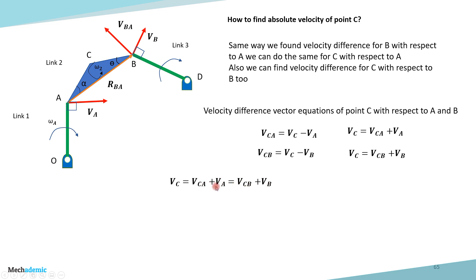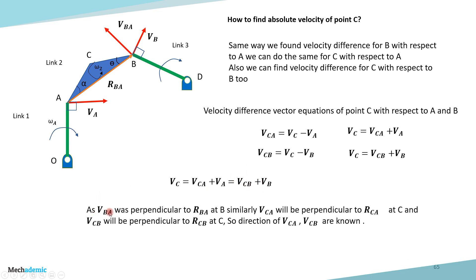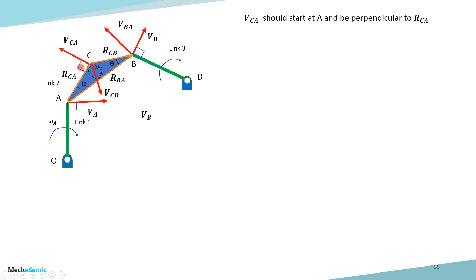To find the directions of VCA and VCB, we apply the same logic as for VBA: VBA was perpendicular to RBA at B, so VCA is perpendicular to RCA at C, and VCB is perpendicular to RCB at C. RCA is the line connecting A to C, and RCB is the line connecting B to C. So the directions of VCA and VCB are now known. On the diagram, RCA and RCB are shown in orange, while VCA and VCB are shown in red.